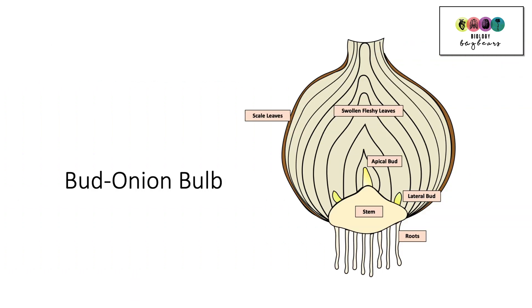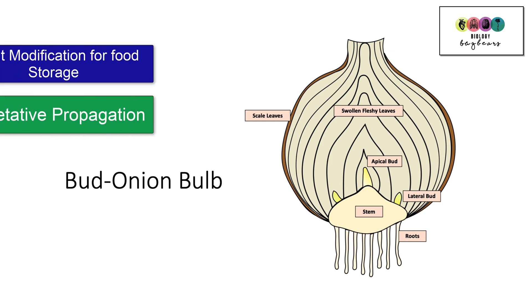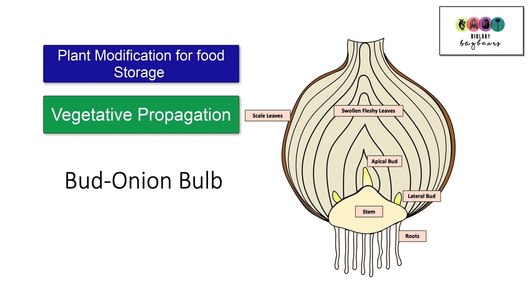We encountered the diagram of the onion in vegetative propagation, so asexual reproduction in plants, but also in food storage. So it's really important that you can label the onion. Very important, not very often asked and could appear just to throw you.